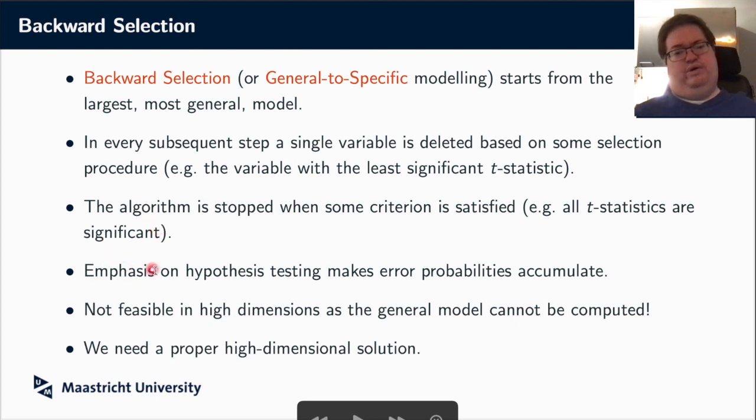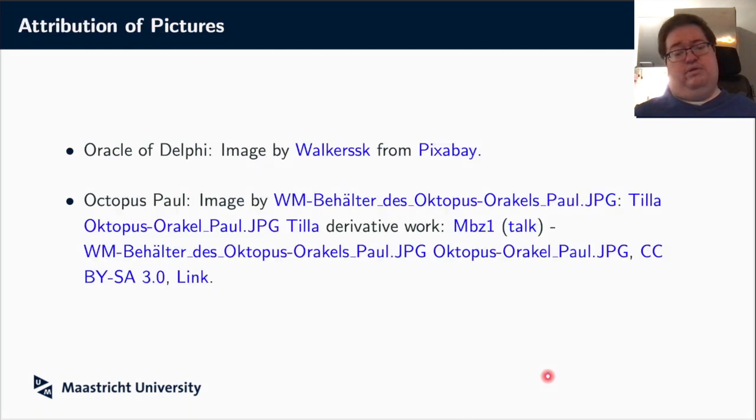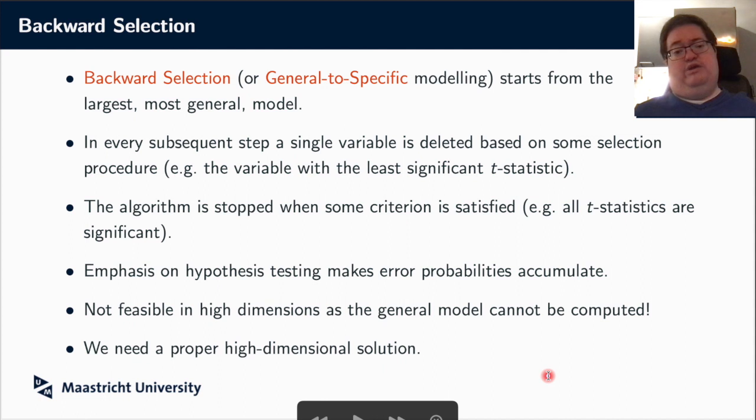Now in this case, we actually are doing a lot of hypothesis testing, and this is often the case with backward selection methods. That means that actually error probabilities accumulate. So this is related to the multiple testing problem where every time you do tests, you're not actually controlling error anymore. It also has big problems in high dimensions because, you know, the first step already doesn't work. The largest, the most general model, suppose you would want to estimate that using least squares, you basically already cannot do that anymore. So this one also will not actually give you a proper solution for high dimensional settings.